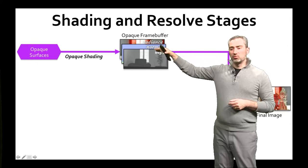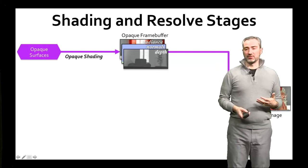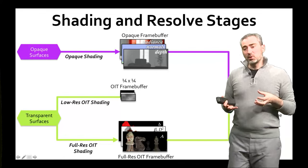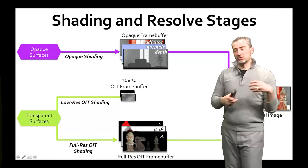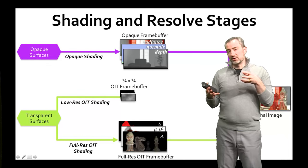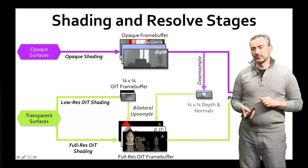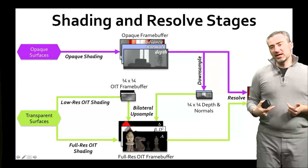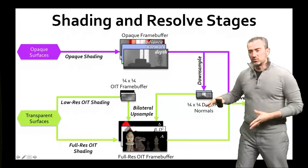For the actual shading, opaque surfaces go through a regular forward-plus or G-buffer shading pass, producing an output image as well as normals and depth values. Transparent surfaces are routed two different ways: low-resolution surfaces such as particles, where there may be many needing quick processing, can run at quarter resolution or lower and go into an order-independent frame buffer. Full-resolution surfaces like glass go into a separate frame buffer. We then downsample the normals and depth, use those as input for a bilateral upsampler to resolve everything into the full-resolution frame buffer, and composite that into the final image.